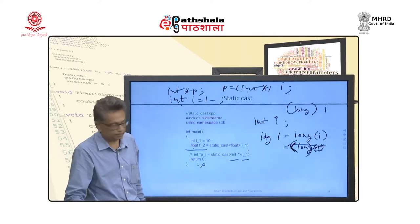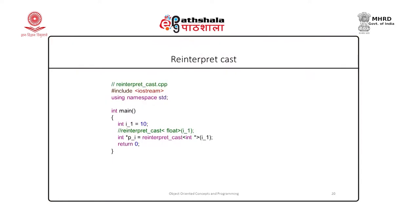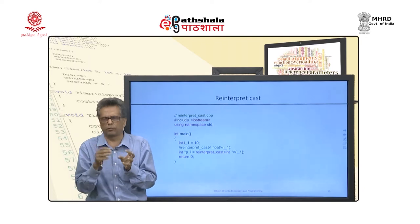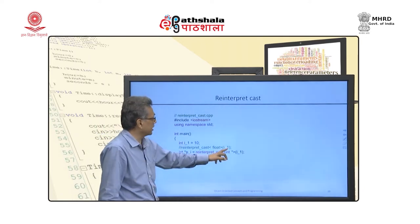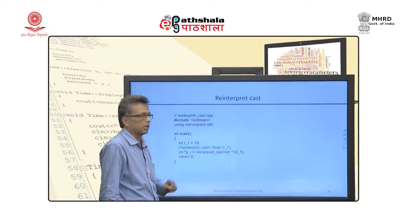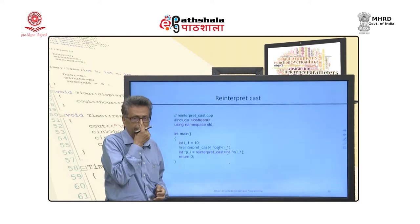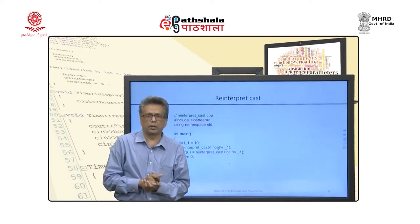Exactly opposite to static cast, we have reinterpret cast. Reinterpret cast is used for the unconventional case: converting an integer into a pointer. You cannot use static cast for converting an integer to int*, and you cannot use reinterpret cast for converting an integer to float. But with reinterpret cast you can convert an integer into int*. So instead of C-style casting, you should use reinterpret cast for such unconventional operations.